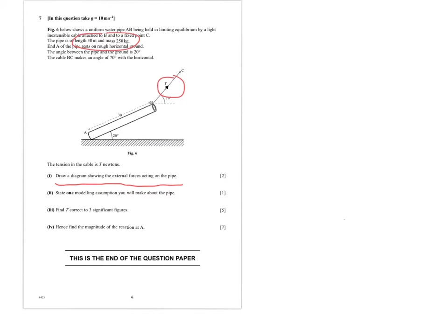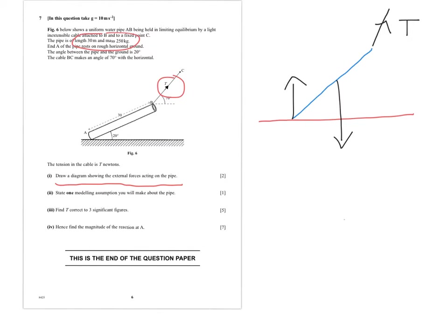Part two asks us to state one modelling assumption we're making about the pipe. When drawing the diagram, you would never draw a 3D object like the pipe. So we start off by drawing the ground, then represent the pipe just as a line, and mark on the tension in the cable and the other forces. So there's the force T, the weight acting downwards, the normal reaction at point A, and the frictional reaction acting to the left. The weight is 250g.